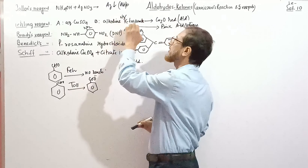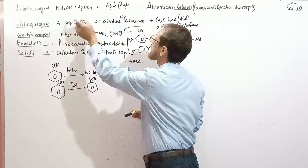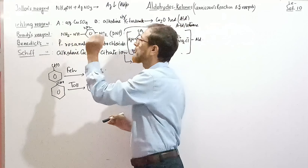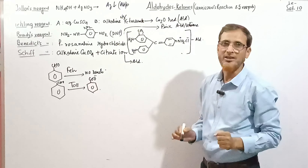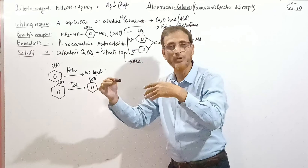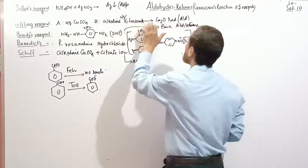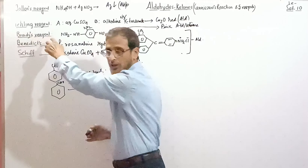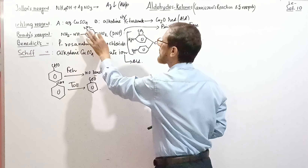Second, Fehling reagent — also an important test for aldehydes, not ketones. Fehling A is aqueous copper sulfate solution; Fehling B is alkaline sodium potassium tartrate. When mixed, they give a solution containing Cu²⁺ and tartrate ions. When reacted with aldehyde, the CHO group is oxidized to COO⁻, and Cu²⁺ is reduced to Cu₂O, giving a brick-red precipitate.